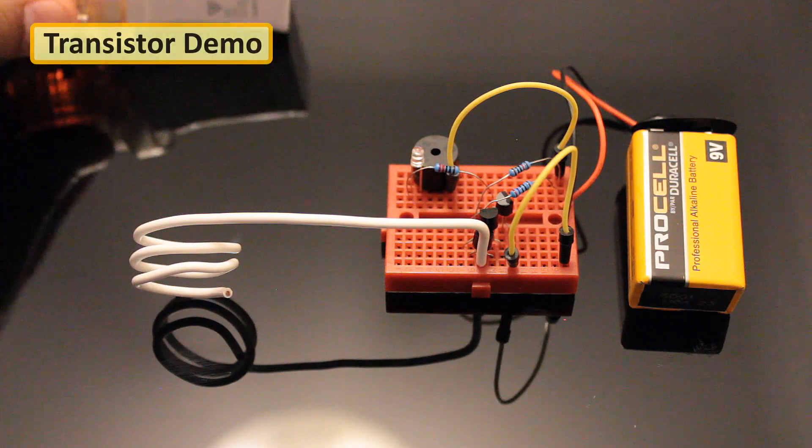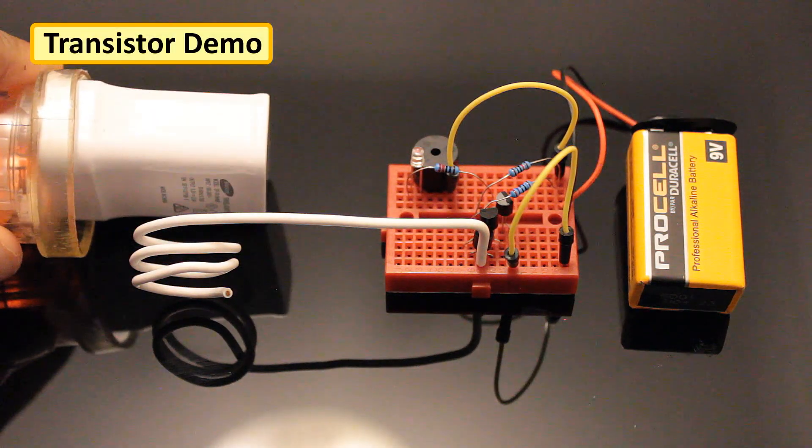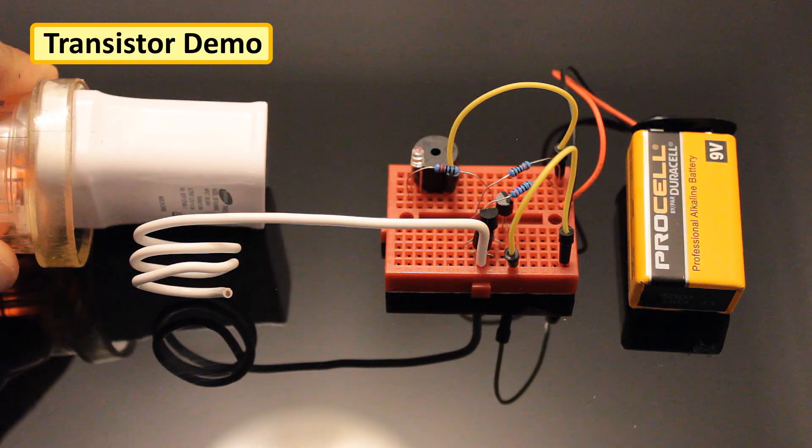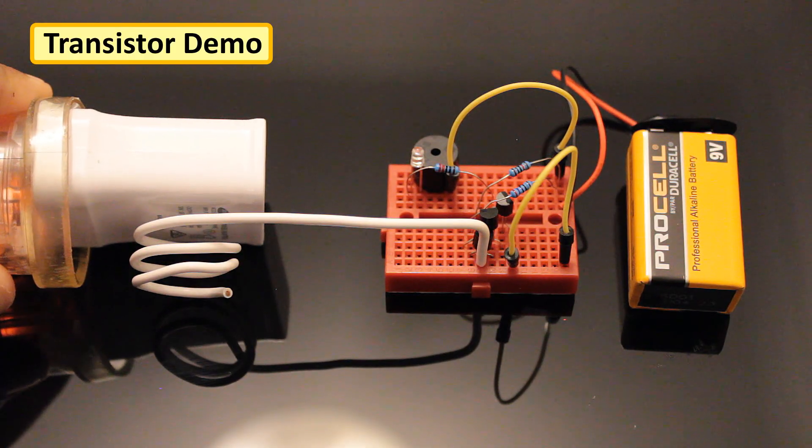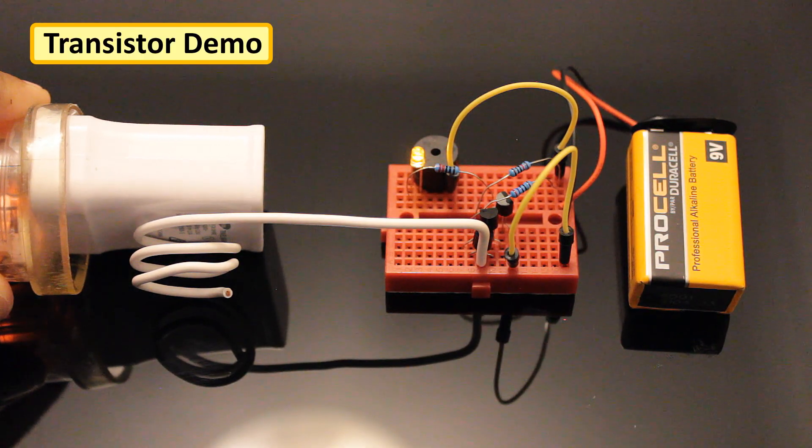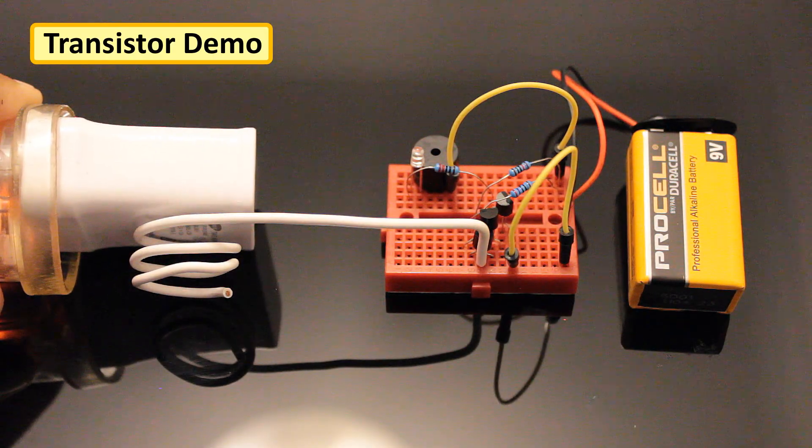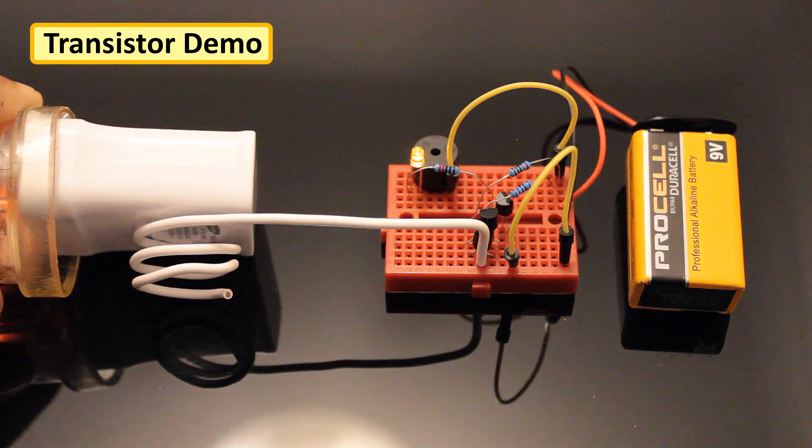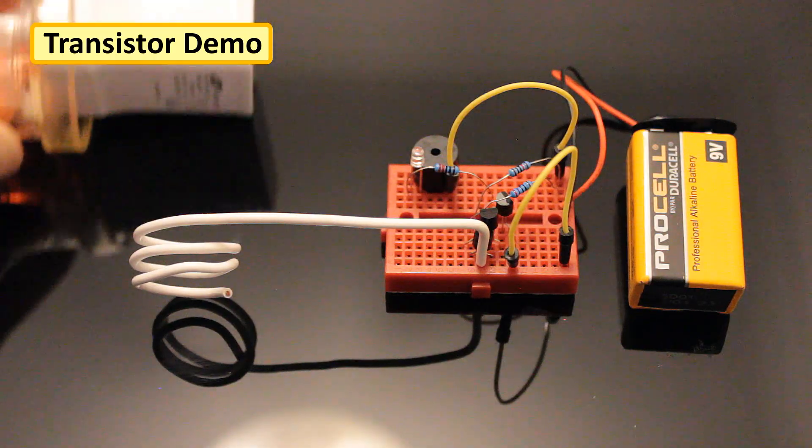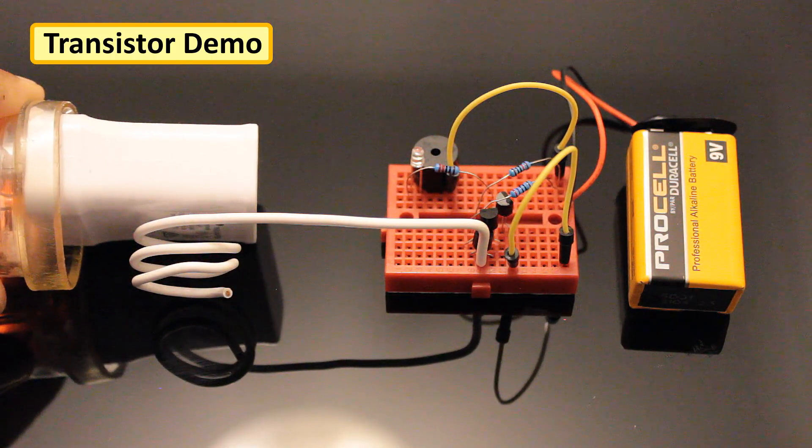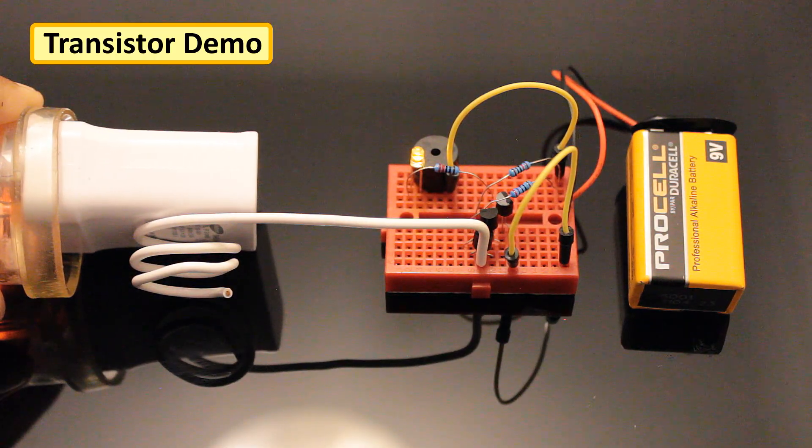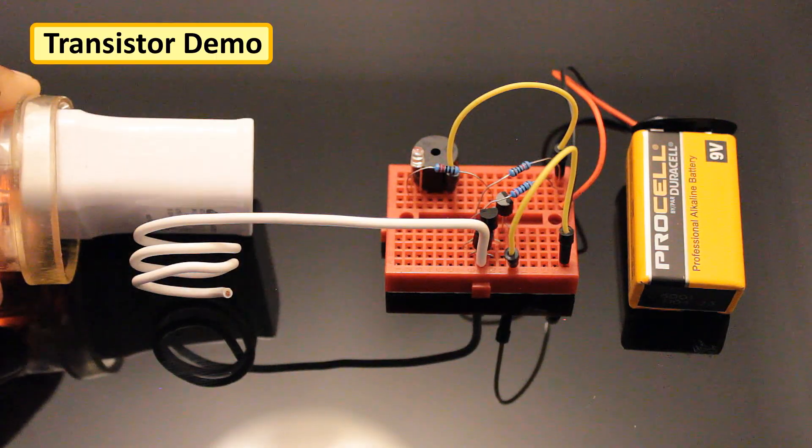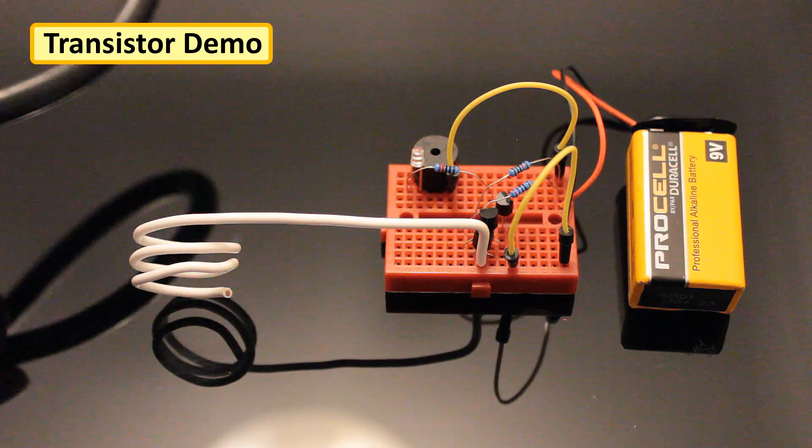When we move the antenna close to an AC-energized object, a small current gets induced into the antenna due to electromagnetic induction. This current triggers the first transistor and output of the first transistor triggers the second and the third. The total gain or the ratio of the collector to the base current would then be the multiplication of the three. The third transistor then turns on the LED and the buzzer circuit indicating the presence of AC voltage.